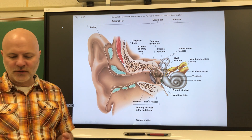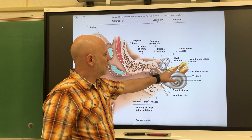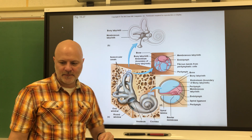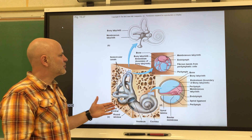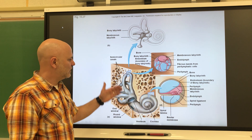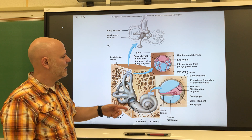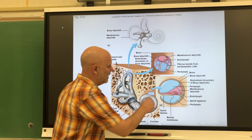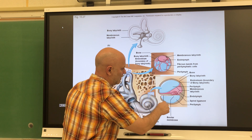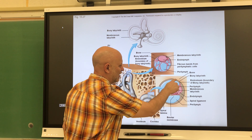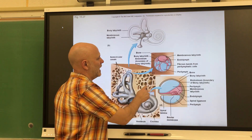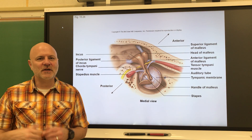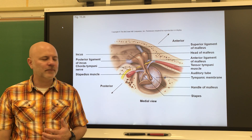The inner ear is also known as the labyrinth — labyrinth means maze. Looking at the structure, we have an osseous labyrinth, which you can think of as an outer shell — a bony canal in the temporal bone.